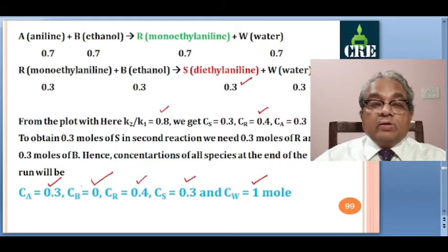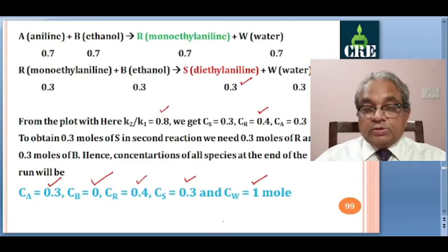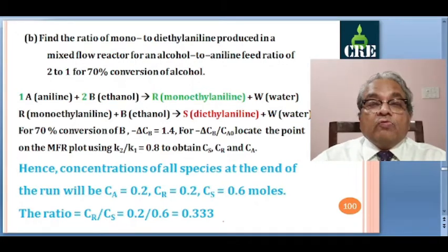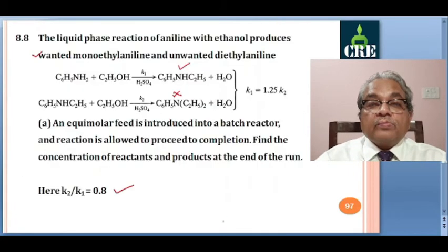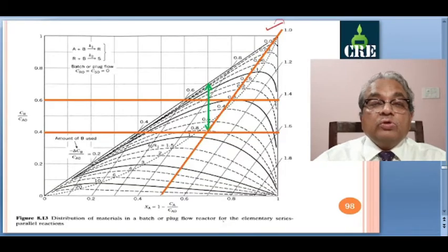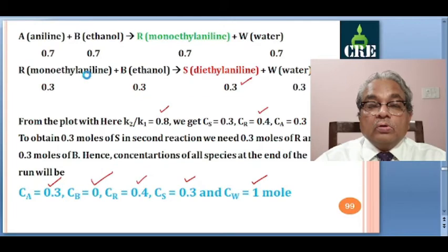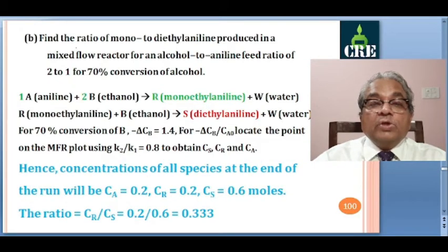Water formation will be 0.7 plus 0.3 equals 1. To obtain 0.3 moles of S in the second reaction, we need 0.3 moles of R and 0.3 moles of B. This will be the concentration of all species taking part in the reaction. Part B: find monoethylaniline. Part A was for a batch reactor using this chart for batch or plug flow.